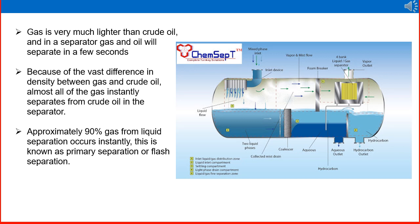Gas is much lighter than crude oil, and in a separator, gas and oil will separate in just a few seconds because of the vast difference in density. Almost all of the gas instantly separates from crude oil in the separator. Approximately 90 percent of gas-liquid separation occurs instantly. This is known as primary separation or flash separation.